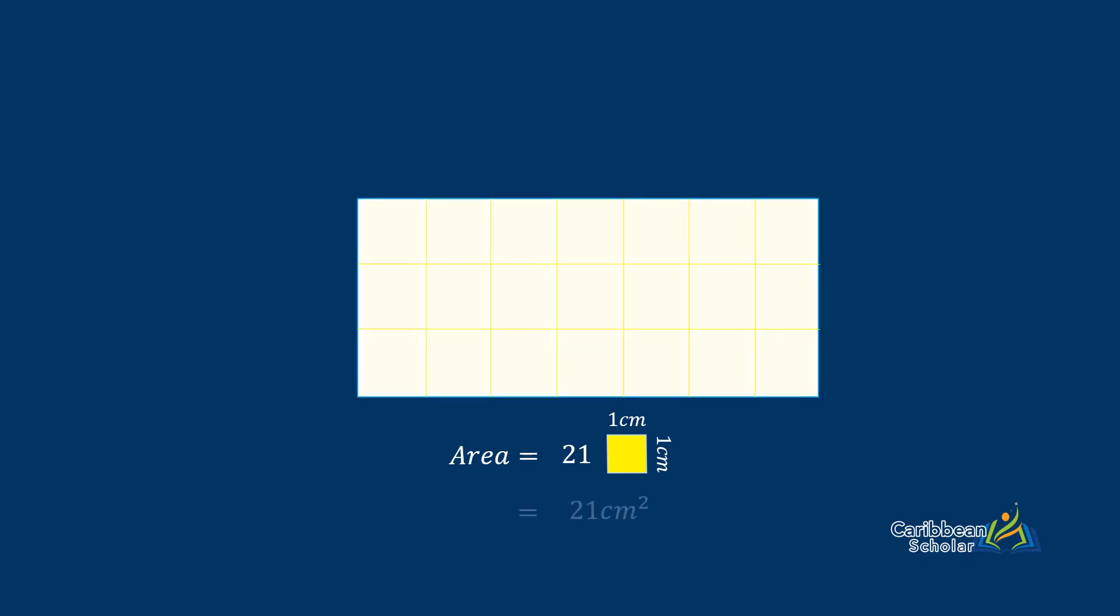Okay, so the area is 21 of these little squares, but to avoid having to write squares all the time, we write this cm² notation. But effectively, they mean the same thing.